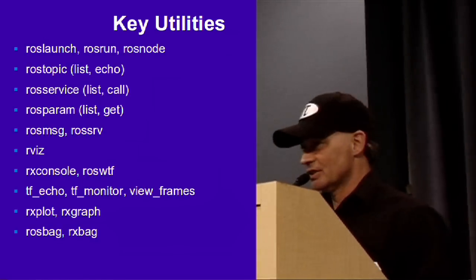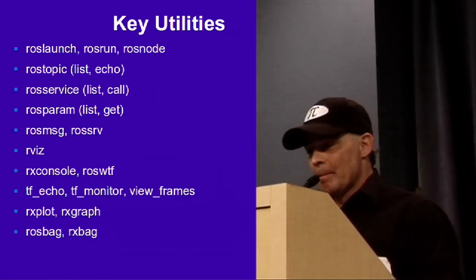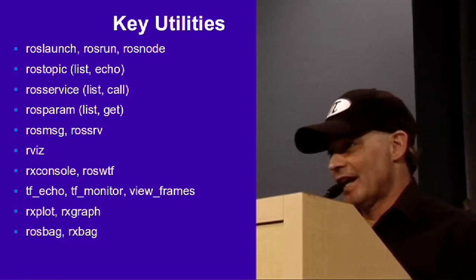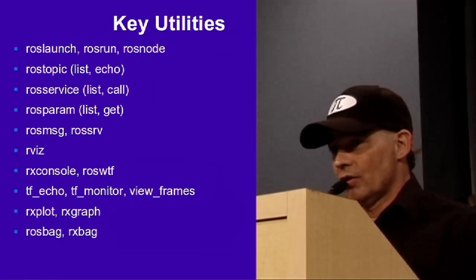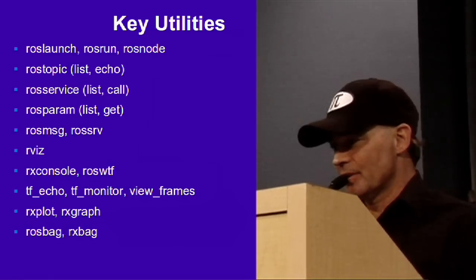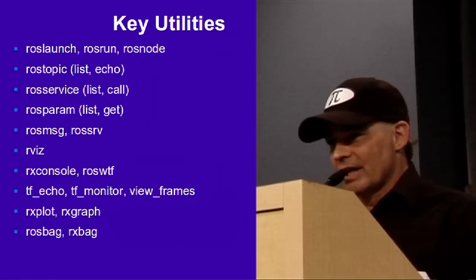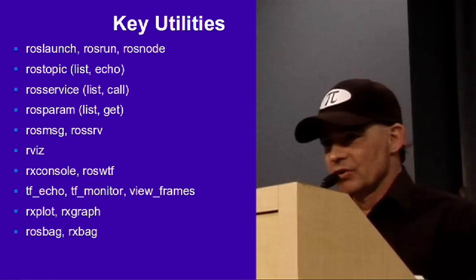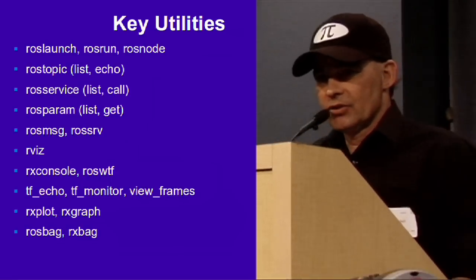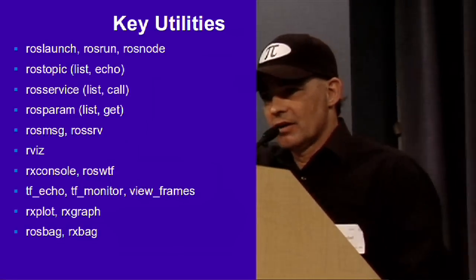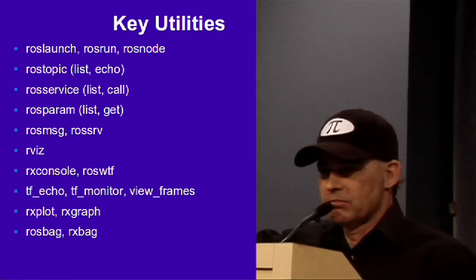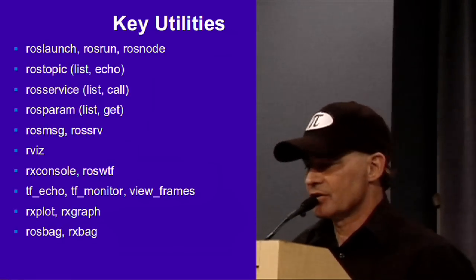Rxplot actually lets you plot a two-dimensional timeline of different values. So if you're curious about what a particular sonar value is really reporting and you don't want to just look at a stream of numbers going by the screen, in real time while your nodes are running, you can plot it out on a nice graph. You'll see immediately whether or not there's noise blipping in the middle of it or something like that.